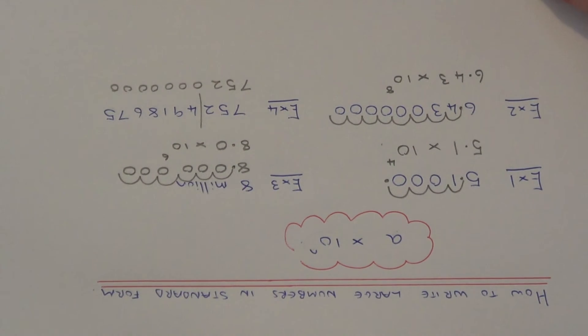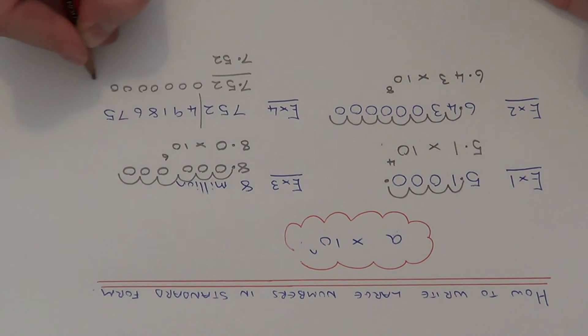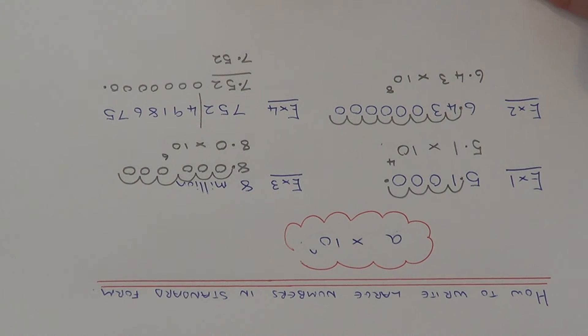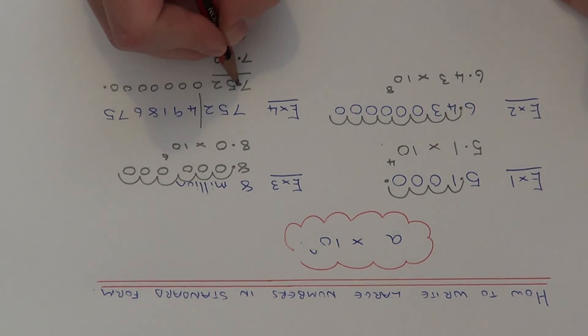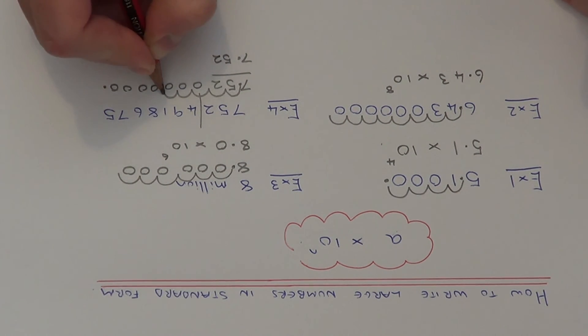So we now can put this number in standard index form. So our first number has to be between 1 and 10, so we can write that as 7.52. So how many times do we need to multiply it by 10 to give us the original number? So that is 1, 2, 3, 4, 5, 6, 7, 8, 9.